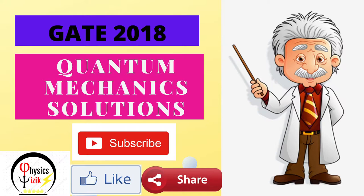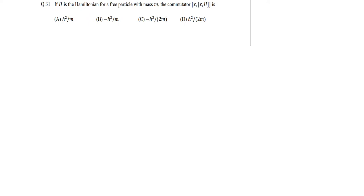Hello everyone, welcome to Physics Physics. Today we are going to solve quantum mechanics from the GATE 2008 paper. We are going to do a sum on commutators. The question 31 in the GATE 2008 paper was: if H is the Hamiltonian for a free particle with mass m, the commutator...